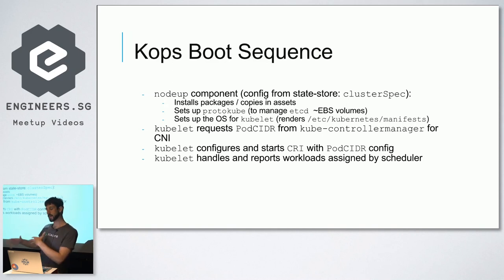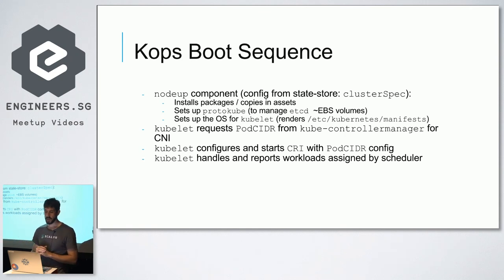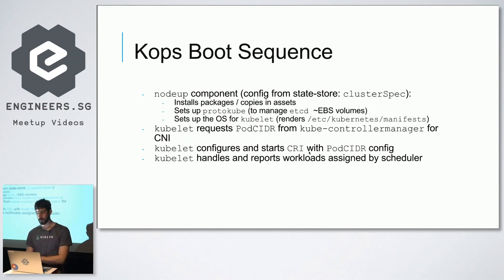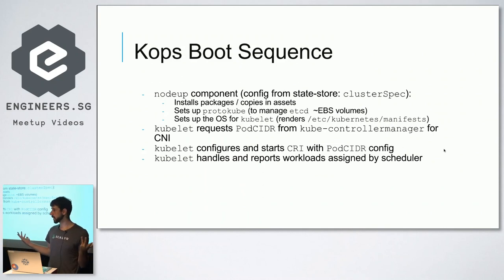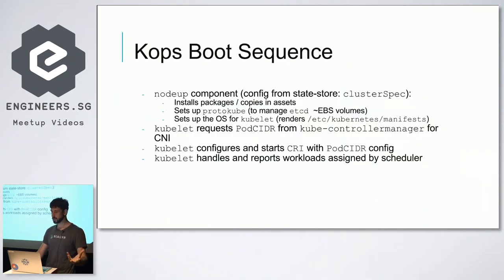After NodeUp, everything the kubelet needs is set up — it renders all the manifests to run Kubernetes components like kube-proxy. Previously we used systemd units and copied them into CoreOS. Now we just define a manifest and NodeUp takes care of all of that. After the kubelet comes up, it requests a subnet for its pods — kubectl notices and allocates a subnet for the node.